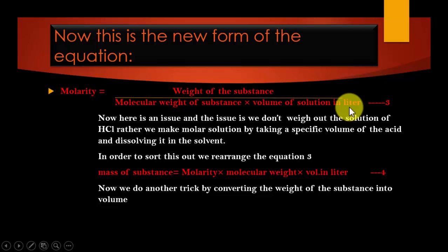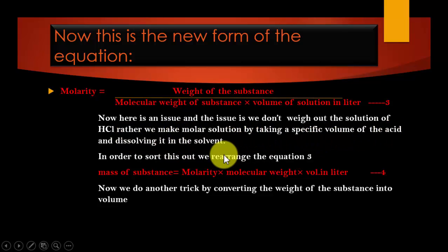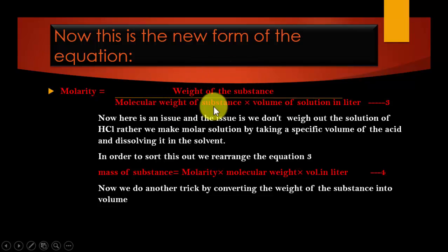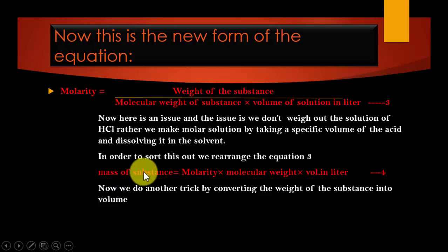Here is an issue: we don't weigh out the HCl solution. Rather, we make a molar solution by taking a specific volume of the acid and dissolving it in solvent. To sort this out, we rearrange equation number three, because we don't want to weigh out the HCl solution — we want to take a volume of it.